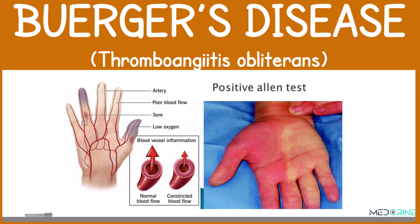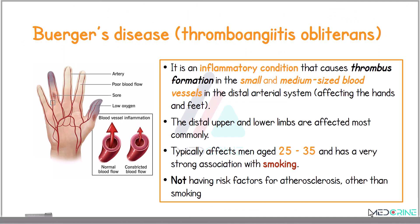Hello and welcome. Today we shall be looking at Buerger's disease, also known as thromboangitis obliterans. Buerger's disease is an inflammatory condition that leads to the formation of thrombi within the small and medium-sized blood vessels. This primarily affects the distal arteries of the hands and the feet.